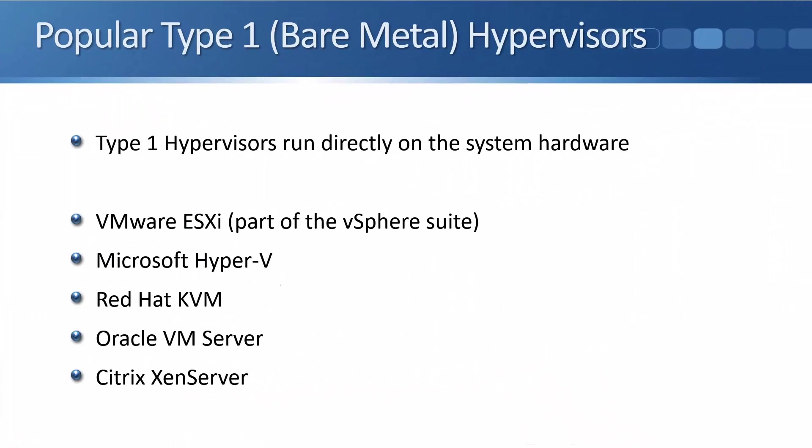The VMware ESXi hypervisor I showed is a Type 1 hypervisor — there are two types: Type 1 and Type 2. The most popular Type 1 hypervisors are VMware ESXi, Microsoft Hyper-V, Red Hat KVM, Oracle VM Server, and Citrix XenServer. In cloud environments, Citrix XenServer is very popular because it is the cheapest option for cloud service providers. A Type 1 hypervisor runs directly on the system hardware — it's installed directly on the hardware and acts as the operating system, and its other job is to give out access to the underlying hardware to the different virtual machines.